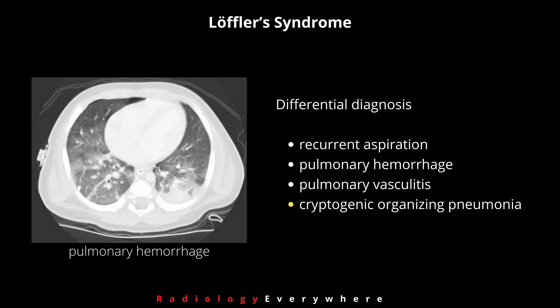When considering the general radiographic findings, the differential diagnosis can include recurrent aspiration, pulmonary hemorrhage, pulmonary vasculitis, or even cryptogenic organizing pneumonia.